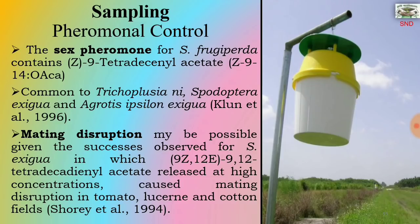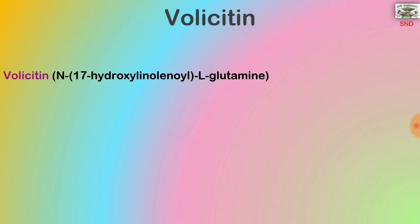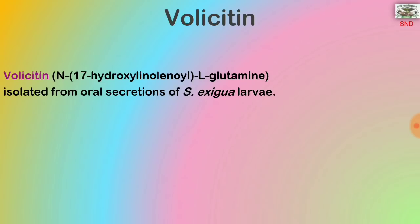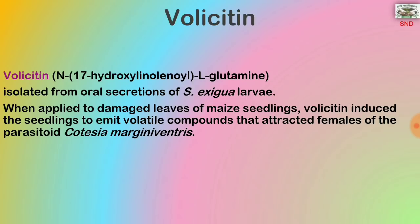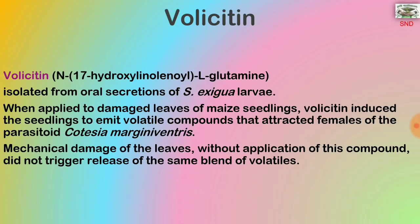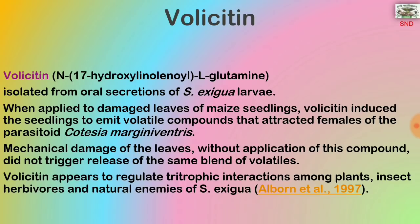Mating disruption may be possible given the success observed for Spodoptera exigua, in which Z9-tetradecenyl acetate released at higher concentration caused mating disruption in tomato, lucerne and cotton fields. Volicitin, N-(17-hydroxy-linolenoyl)-L-glutamine, isolated from oral secretions of Spodoptera exigua larvae, when applied to damaged leaves of maize seedlings, induced the seedlings to emit volatile compounds that attracted females of the parasitoid Cotesia marginiventris. Mechanical damage without application of volicitin did not trigger the same blend of volatiles. Volicitin appears to regulate tritrophic interactions among plants, insect herbivores and natural enemies of Spodoptera exigua.